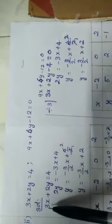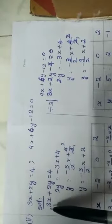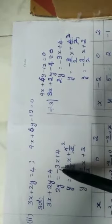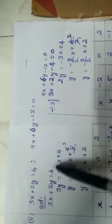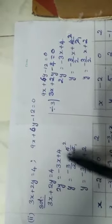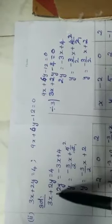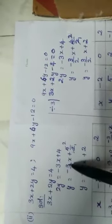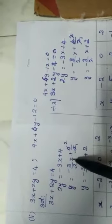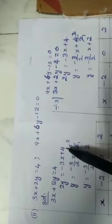First we will write the first equation: 3x plus 2y equal to 4. So 2y equals, if you take this plus 3x to that side, that will become minus 3x and this plus 4 will come as it is. Now y equal to, divided by 2, so minus 3 divided by 2 into x plus 4 divided by 2.